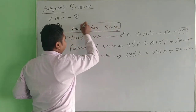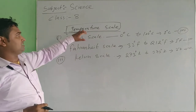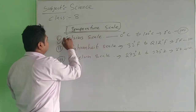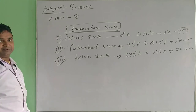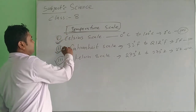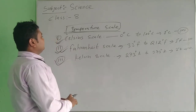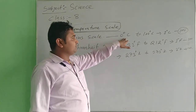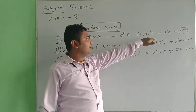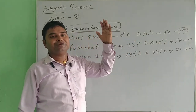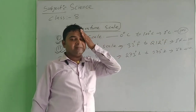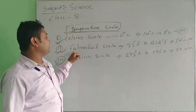Now, temperature scales. The temperature scales are mainly three types: Celsius, Fahrenheit, and Kelvin. The SI unit of temperature is Kelvin, but generally we use mainly Celsius and Fahrenheit. In Celsius scale, the lower point is 0 degree and the higher point is 100 degree, divided into 100 equal parts. One part is equal to 1 degree Celsius.